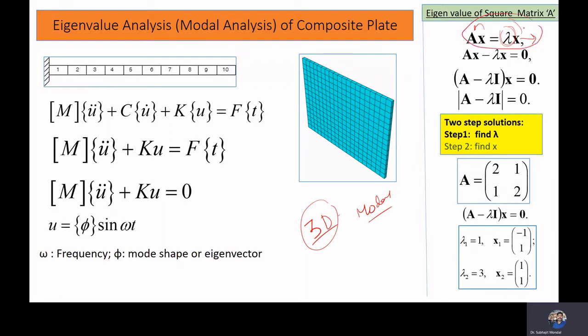To solve the eigenvalue problem, we take the left-hand side, factor out the common vector x, and since the eigenvector is a non-zero vector, the remaining matrix expression must equal zero. We take the determinant and set it to zero to solve for the eigenvalue. The eigen solution is a two-step process.